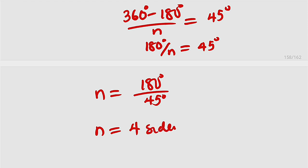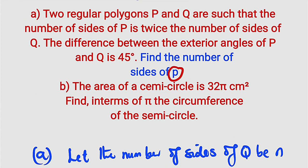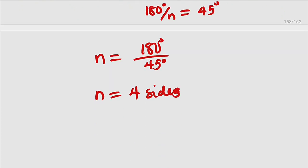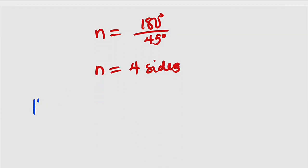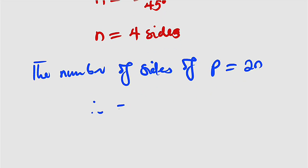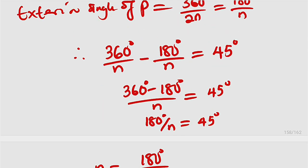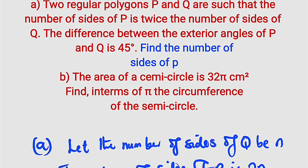That gives us 4 sides. But remember, n represents the number of sides of Q, and the question is asking us to find the number of sides of P, which is twice n. Therefore the number of sides of P is equal to 2n, which is 2 multiplied by 4, giving us 8 sides. The regular polygon P has 8 sides. We have just answered this question; now let us move on to the second part.